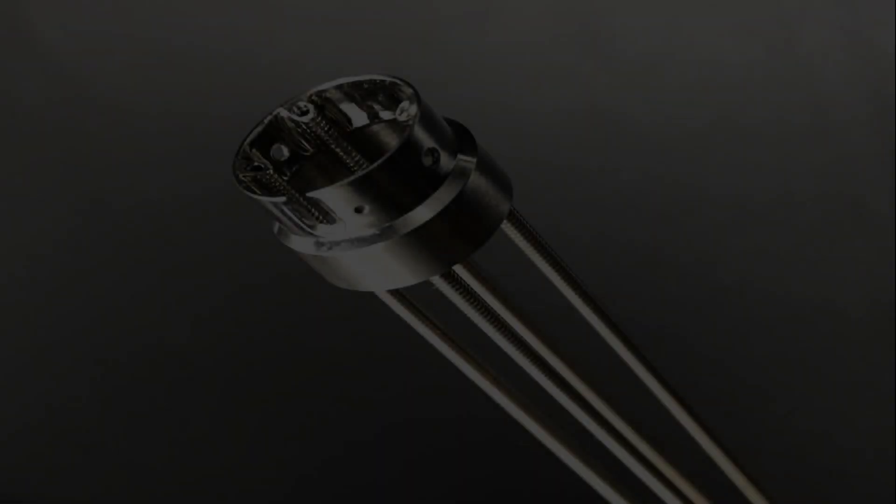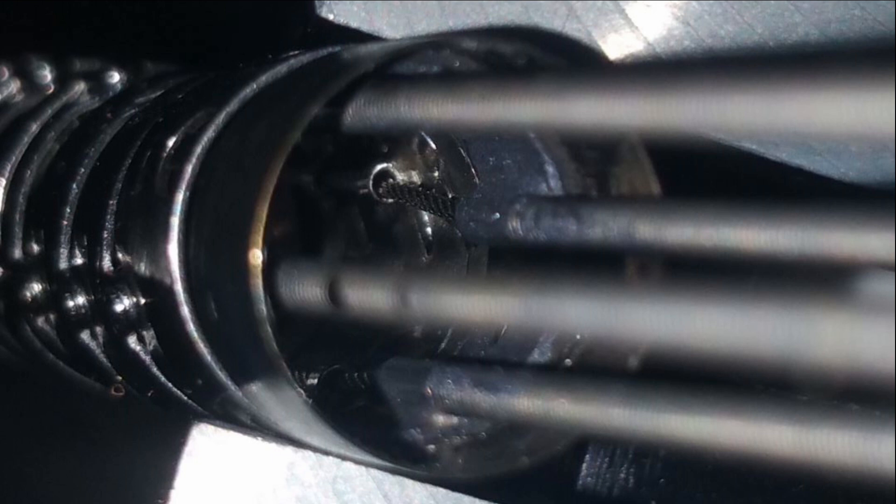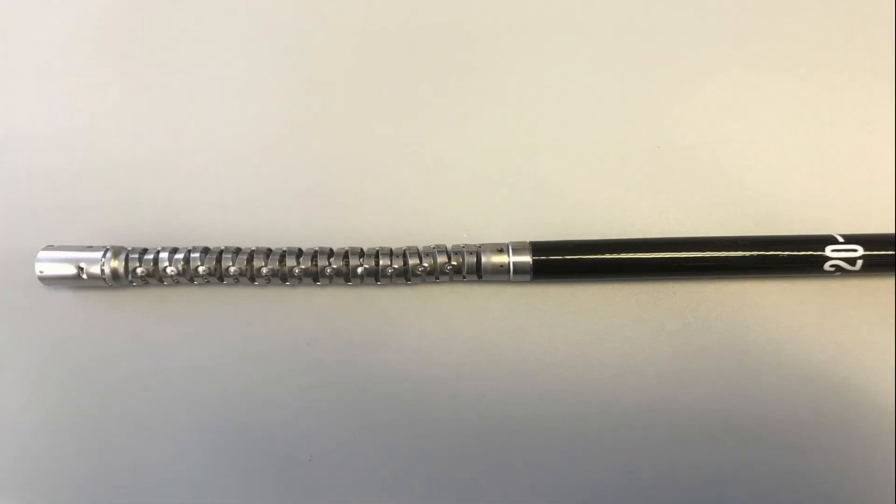Good coil pipe assemblies are known for having a smooth transmission of force through the angulation cables to the bending section, as well as providing rigidity and support to the insertion tube.